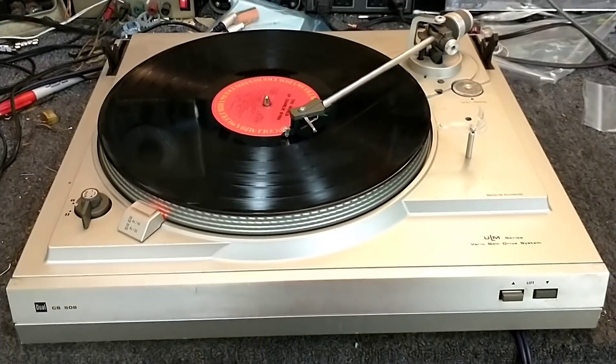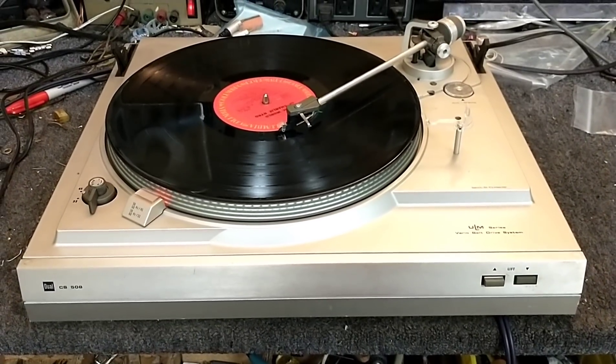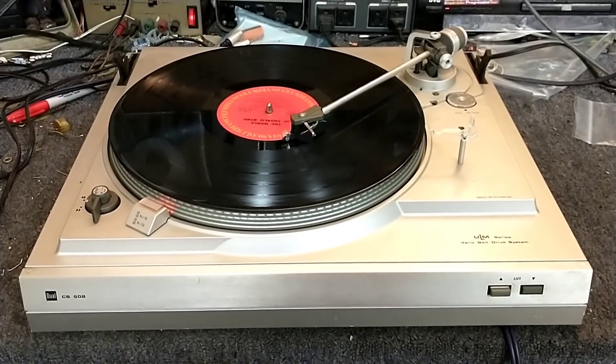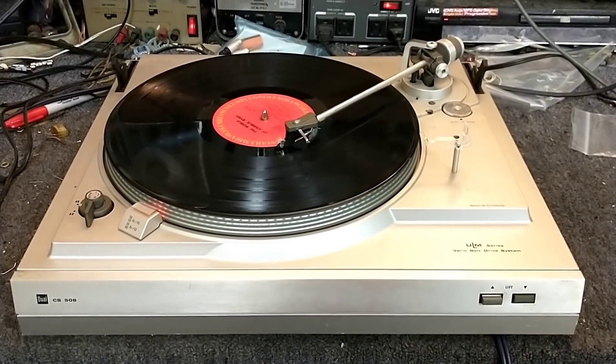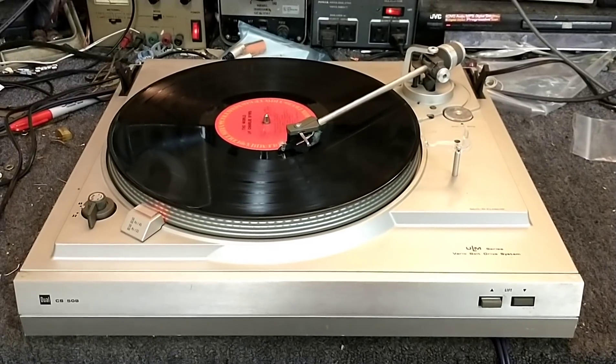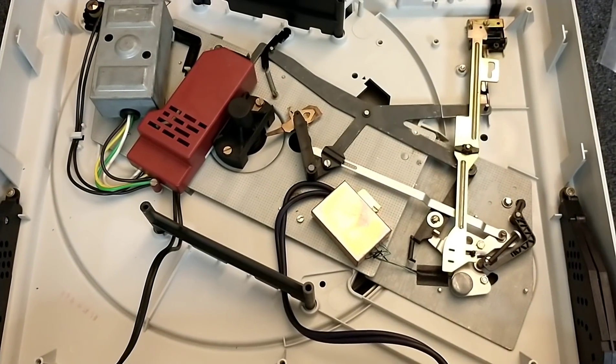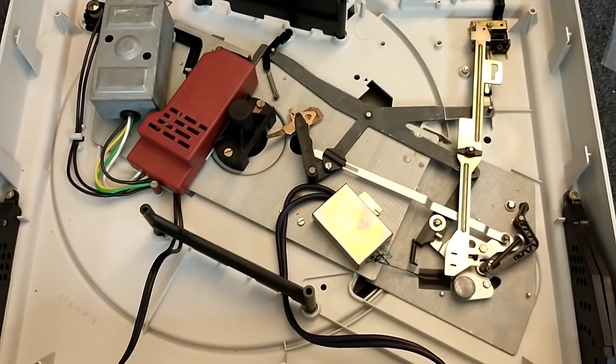So something in that mechanism is binding and we need to take care of that, because everything else on the turntable works fine. So let's get the cover off and see what's going on here. Okay, so when you take the bottom cover off, this is what you're going to see.